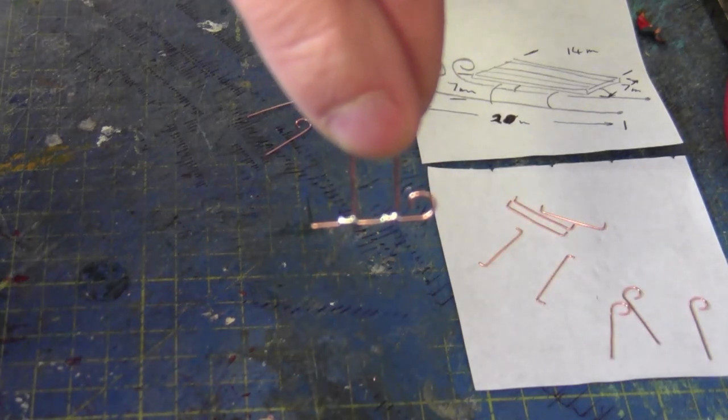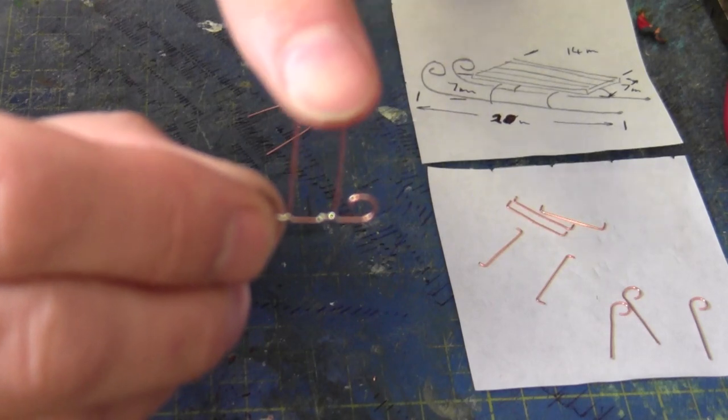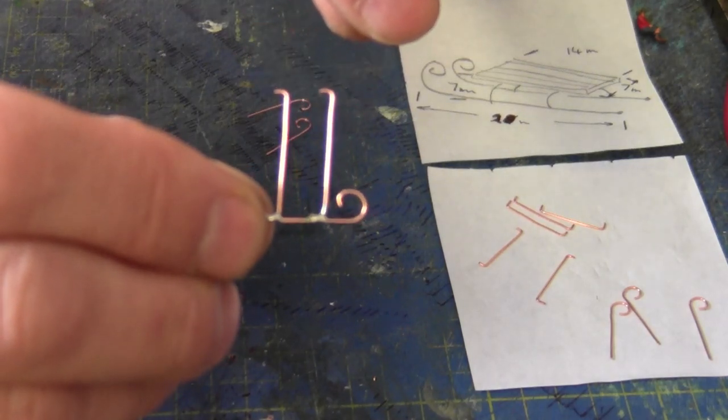So you get something like that and then once we've soldered the other half on it's just a case of folding it into shape.